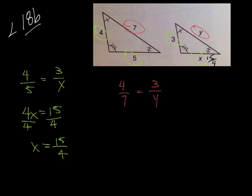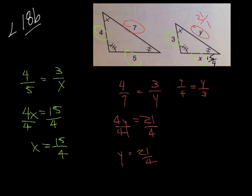I could also write it as 7 over 4 equals y over 3. It doesn't really matter. I'm going to get the same answer anyway. 4y equals 21 divided by 4 divided by 4. My y equals 21 over 4. So this is 21 over 4.